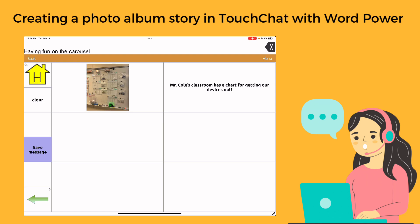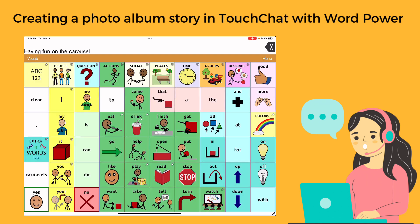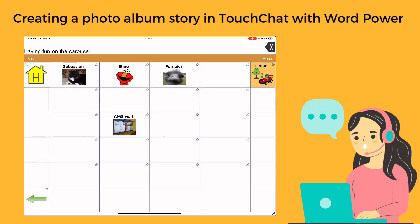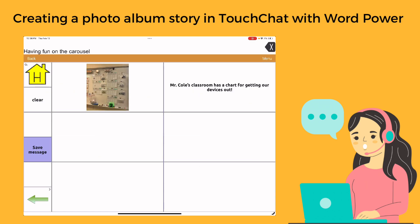Now when I go back to this page — I go groups, I'm going to select photos, I'm going to select AMS visit — and now you can see where we've got this little photo album started. I can select my text over here: 'Mr. Cole's classroom has a chart for getting our devices out.' And then we can tell our story — that's it.